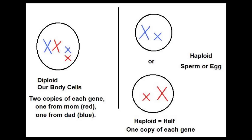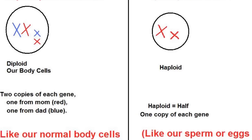Diploid organisms basically have two copies of a gene, whereas haploid is one copy. Our sperm cells and egg cells are haploid, meaning that they contain half of our genetic information. Our body cells — our somatic cells, like a skin cell — are termed diploid because they carry two copies of the genetic information: half from mom and half from dad.